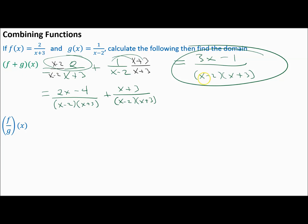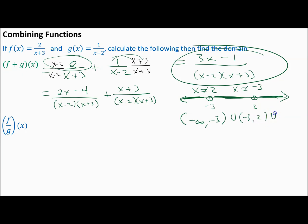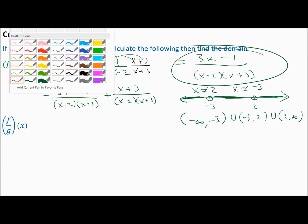For the domain, the denominator cannot equal zero. From (x minus 2), x cannot equal 2. From (x plus 3), x cannot equal negative 3. On the number line those two values are excluded, so the domain is negative infinity to negative 3, union negative 3 to 2, union 2 to infinity. Rational functions complicate the domain compared to polynomials.